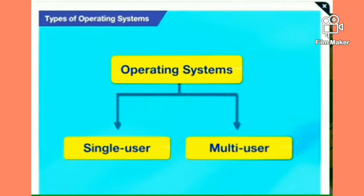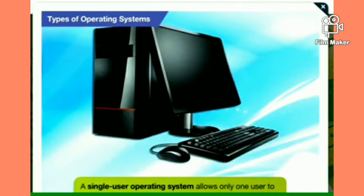Now let's start today's topic. As you can see on your screen, operating systems are broadly classified into two types: single-user and multi-user. A single-user operating system is a system in which only one user can access the computer at a time, and single-user operating systems are usually meant for home use.